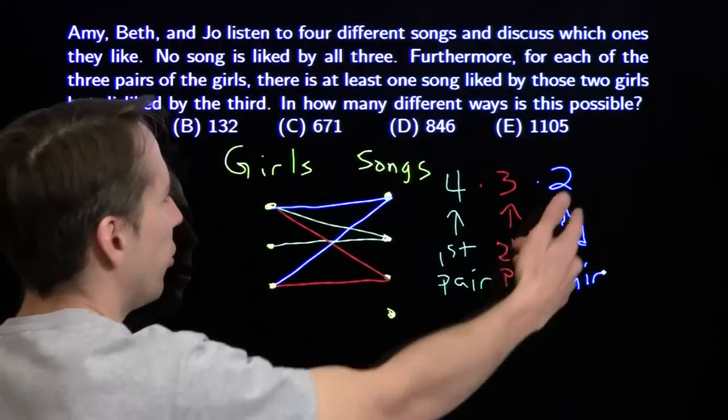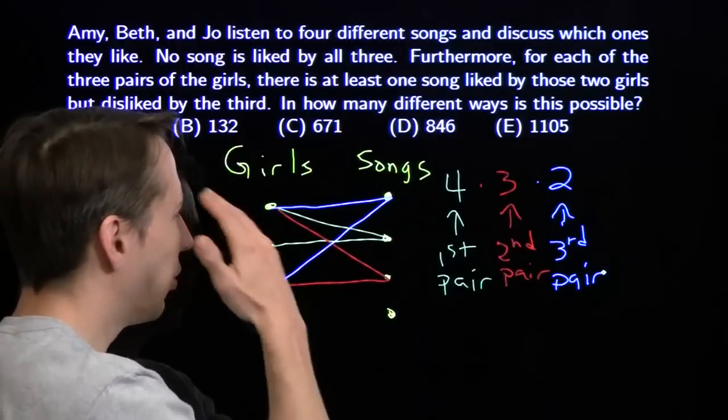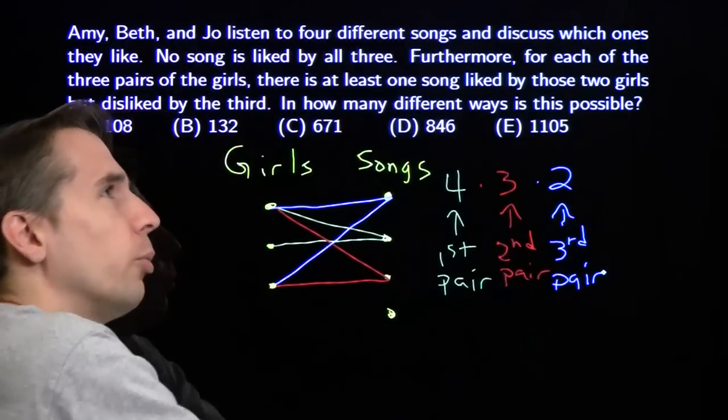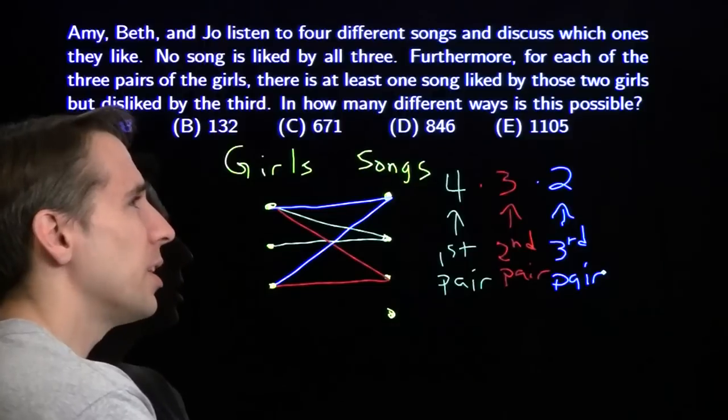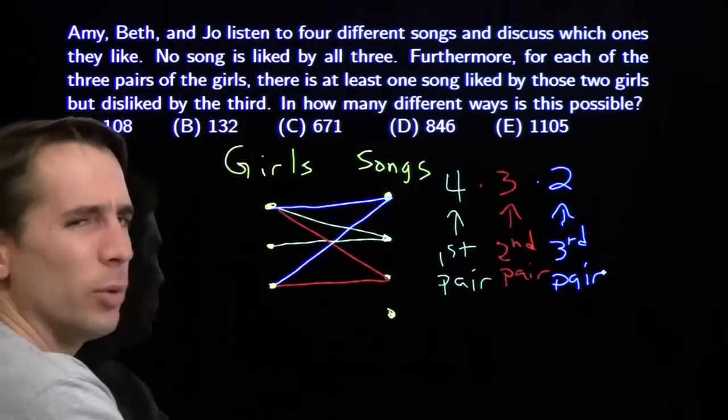But if we put a seven here, four times three times two is twenty-four. Multiplying a seven, we get seven times twenty-four, one hundred and forty plus twenty-eight is one hundred and sixty-eight. Not one of our choices.